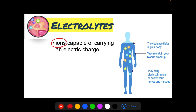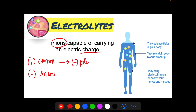So what are electrolytes? They are ions capable of carrying an electric charge. Electrolytes are classified as either cations or anions based on the type of charge they carry and how they migrate in an electric field. If they carry a positive charge, they migrate towards the negative pole, which we call the cathode. If they are negatively charged, they migrate to the positive pole, which is the anode.